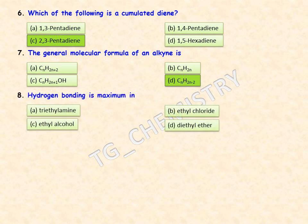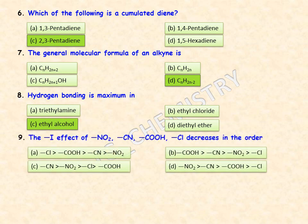Hydrogen bonding is maximum in which of the following? Options are triethylamine, ethyl chloride, ethyl alcohol, and diethyl ether. The correct answer is ethyl alcohol (option C), as it forms strong intermolecular hydrogen bonds.